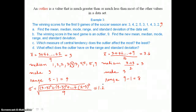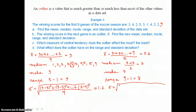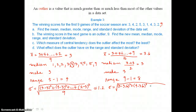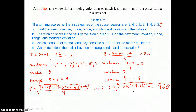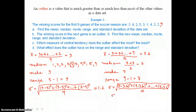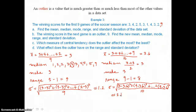For the new standard deviation, we set up the formula with each value minus the new x-bar of 3.6, squared, all the way out to 9 minus 3.6 squared, divided by 10. Approximating to one decimal place, we get 2.1. So the standard deviation has increased, which means the data in the second set is more spread out, more dispersed.